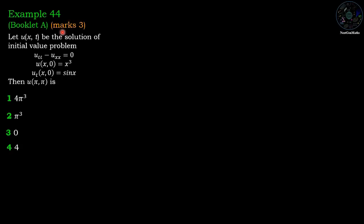Example number 44, booklet A, marks 3. Let u(x,t) be the solution of the IVP: u_tt - u_xx = 0 with u(x,0) = x³ and u_t(x,0) = sin x. Find u(π, π). Options: 4π³; π³; 0; 4.